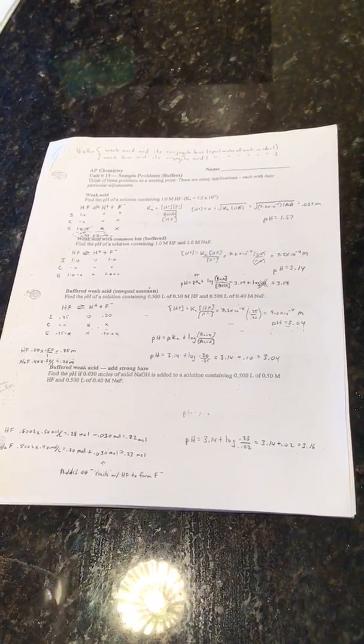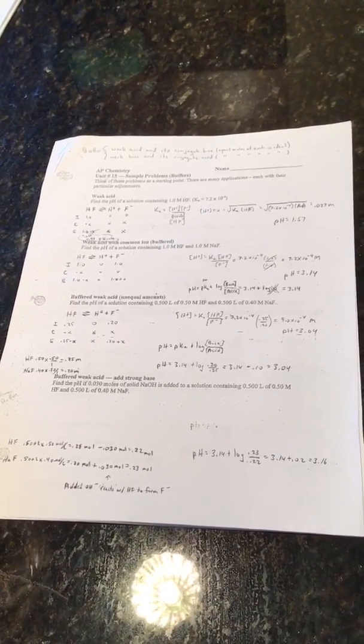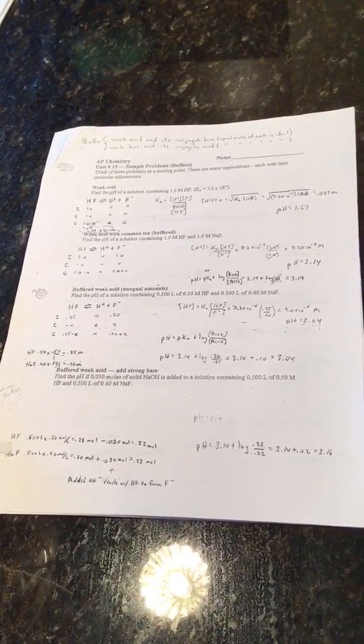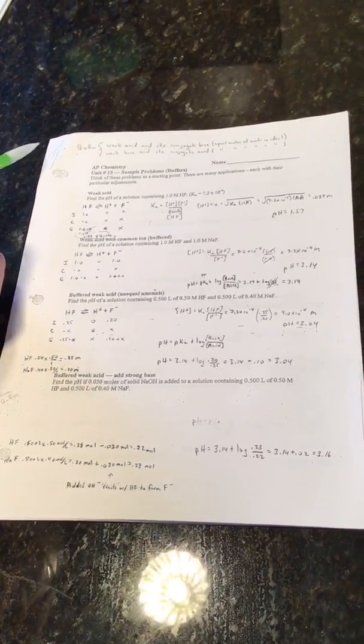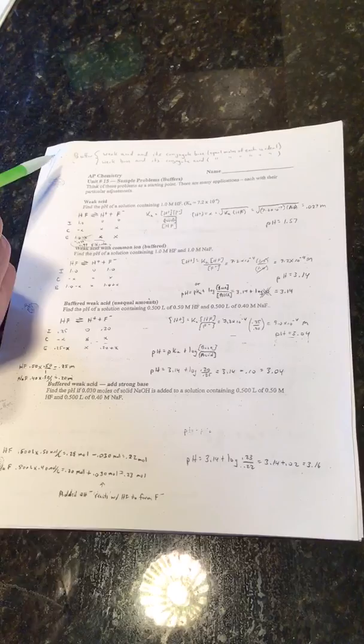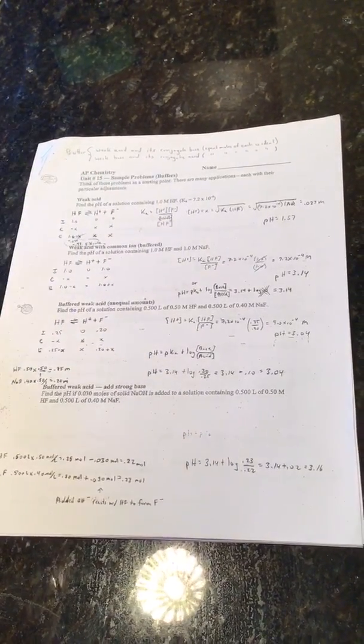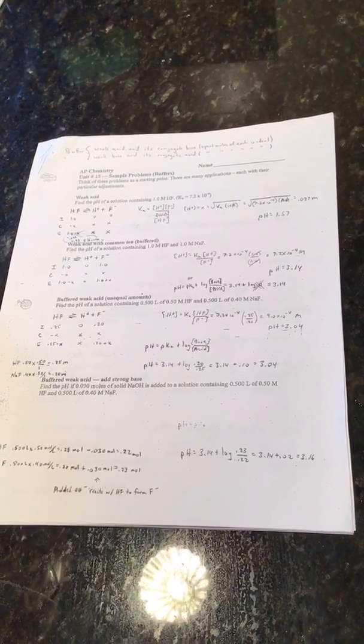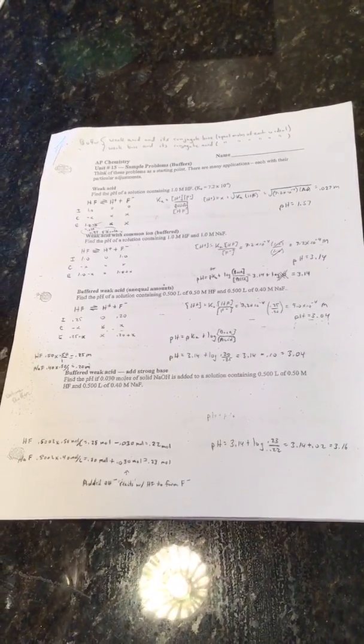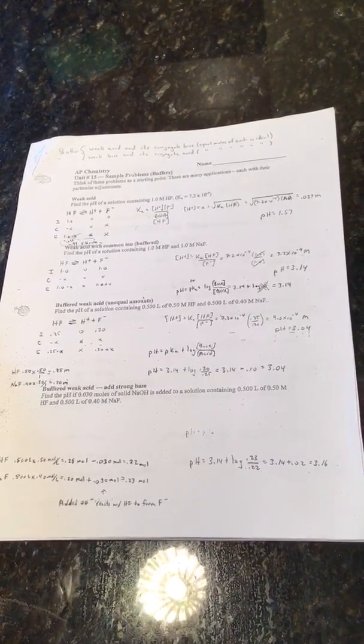Today, we're going to do a lesson on buffers, buffer solutions, and it corresponds to 15.1 through 15.3 in your reading. A buffer is a weak acid and its conjugate base, preferably equal moles of the weak acid and conjugate base, or a weak base and its conjugate acid. A buffer is really effective at resisting significant changes in pH if a strong acid or strong base is added.